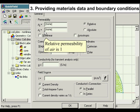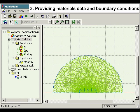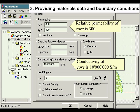Relative permeability of air is 1. Relative permeability of core is 300. Conductivity of core is 10 million Siemens per meter.